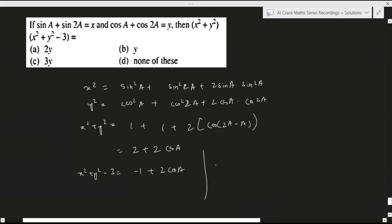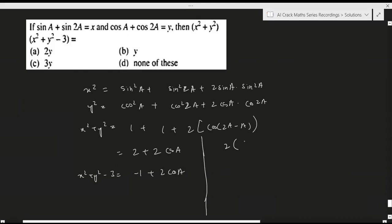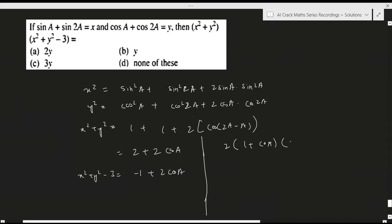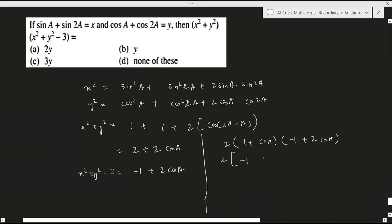Now we have to multiply both of these: 2 times 1 plus cos a multiplied by minus 1 plus 2 cos a. So let's multiply it, we'll get minus 1...